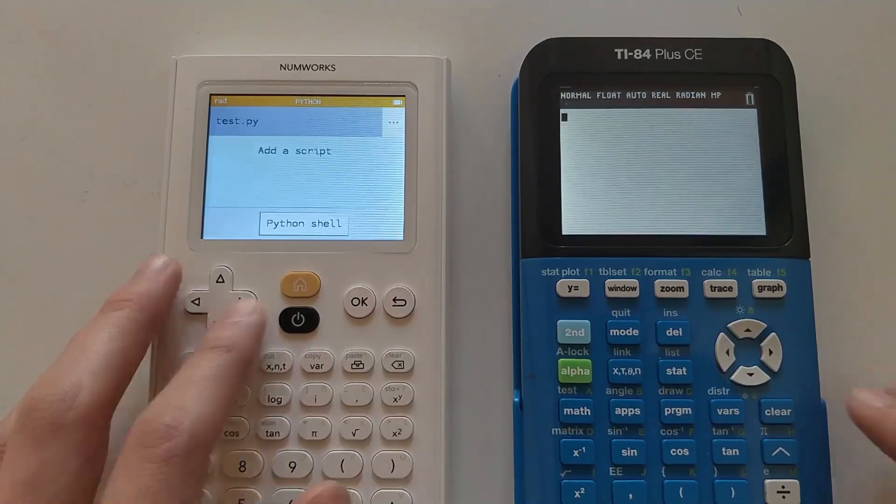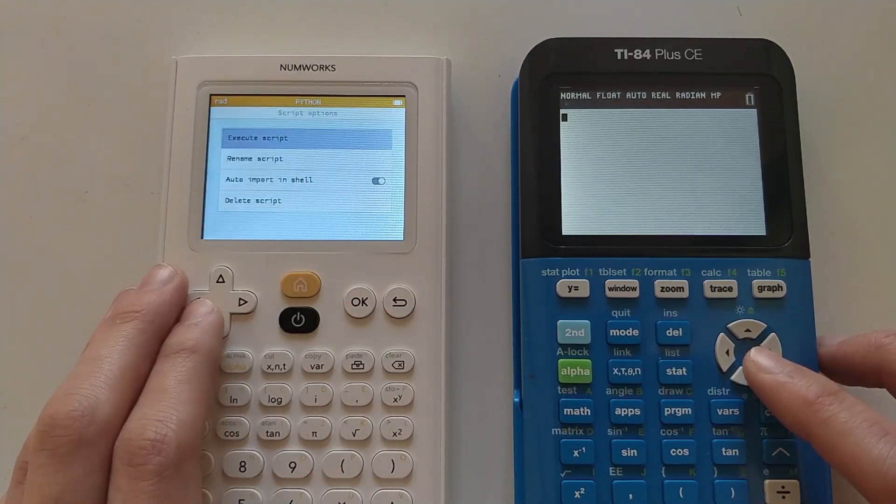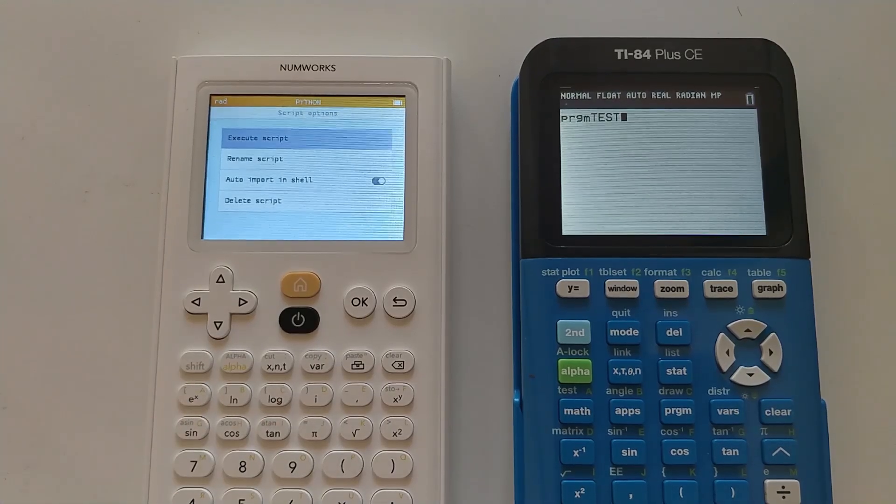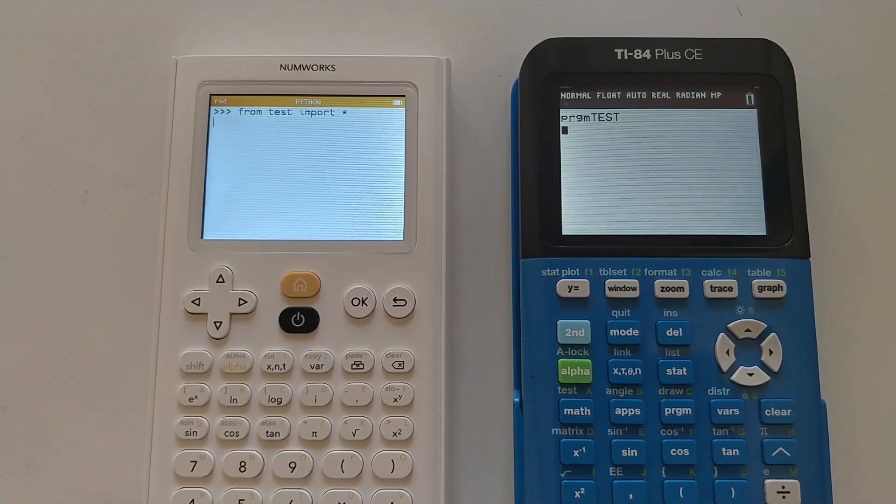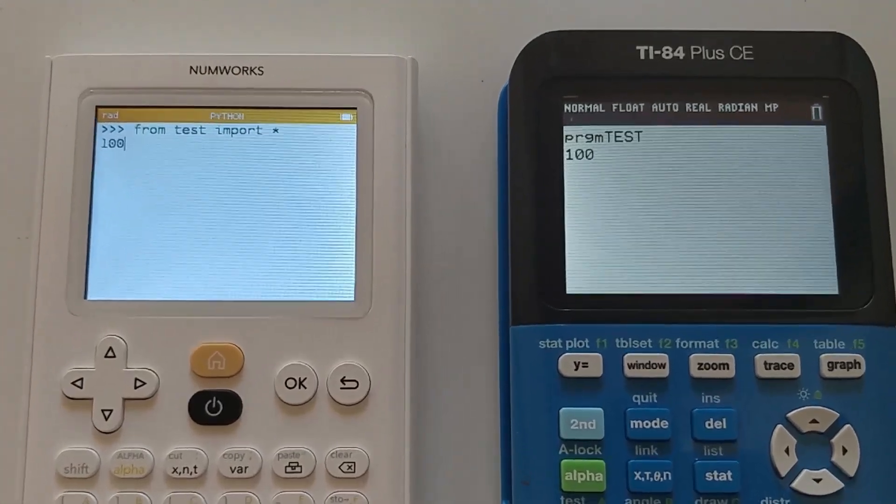In this example, they are both running identical programs that count from zero to the number typed in. The Numworks once again blows away its competition.